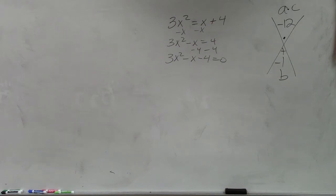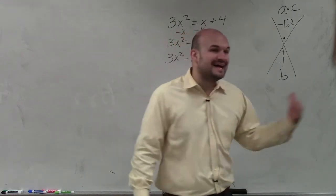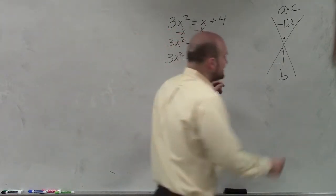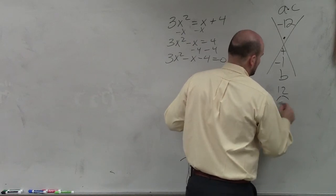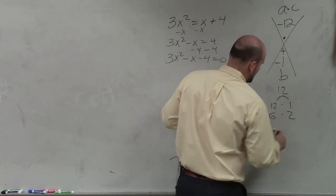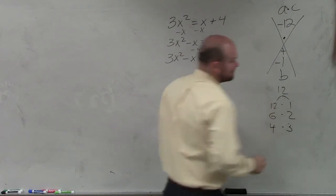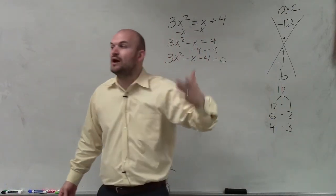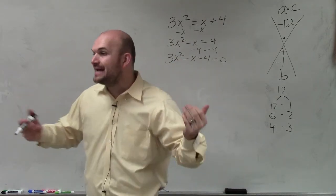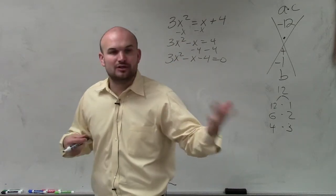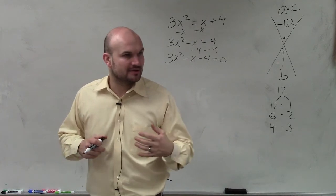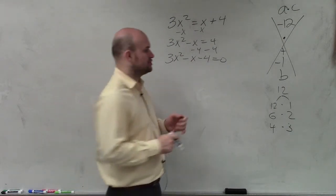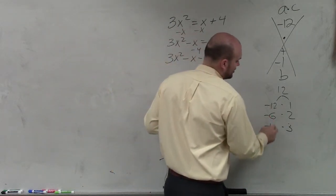So now, again, we need to determine what two numbers multiply to give us negative 12 and add to give us negative 1. Again, if you do not know them in your head, write them out. 12 can be 12 times 1, 6 times 2, 4 times 3. And again, they need to multiply to give you a negative number, right? So that means one of them has to be negative. And if they add to give you a negative number, then the larger or the smaller should be negative? The larger factor or the smaller factor? Smaller. Smaller. Smaller. Larger. Larger.